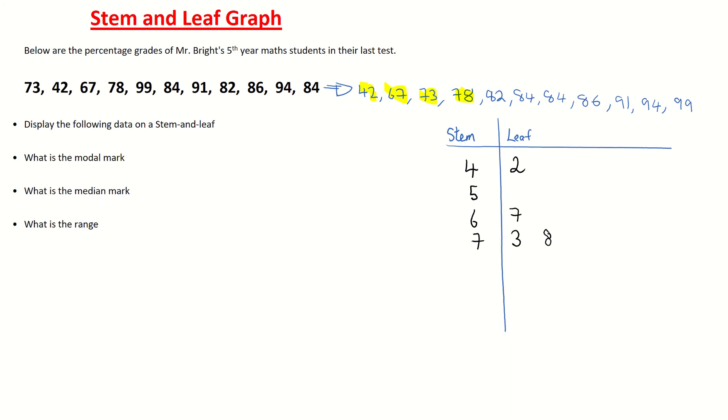Then I'm on to my 80s. So 8 for the 80s. And I'm now going to put in my 82%. So I put 2 in my leaf. And what else have we? Look at the next one. I have an 84 and an 84. So 2 students got 84 in this class test, so I need to put both of them in. So I put in the 4 for the first student, and then I put 4 in again for the second student. So there you can see I've had an 82, an 84 and an 84.